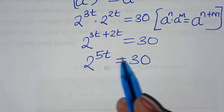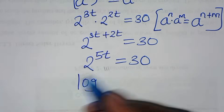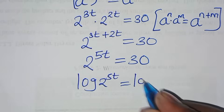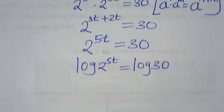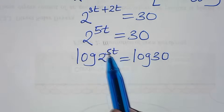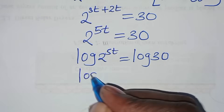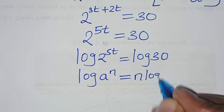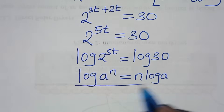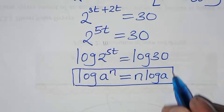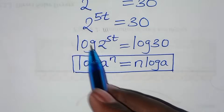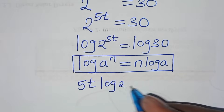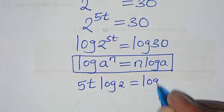To find the value of t, we introduce logarithm on both sides, so we have log of 2 to the power 5t equal to log 30. Now log 2 to the power 5t is in the form of log a to the power n, which we can express as n times log a. Applying this power rule property, log 2 to the power 5t becomes 5t log 2, equal to log 30.